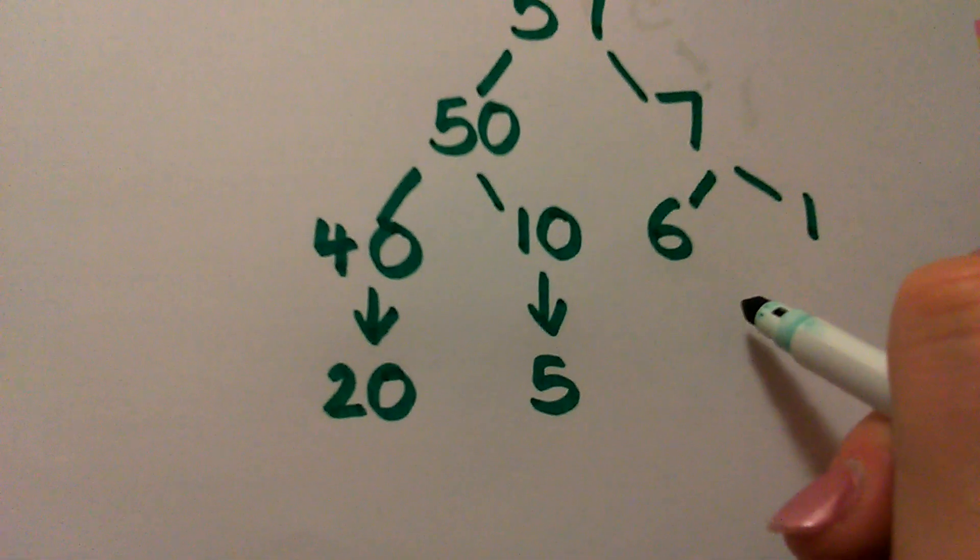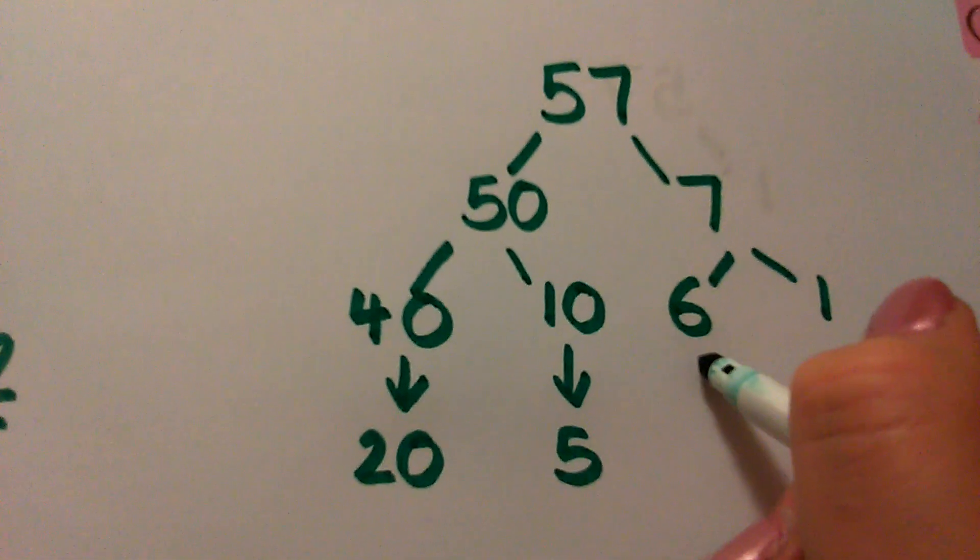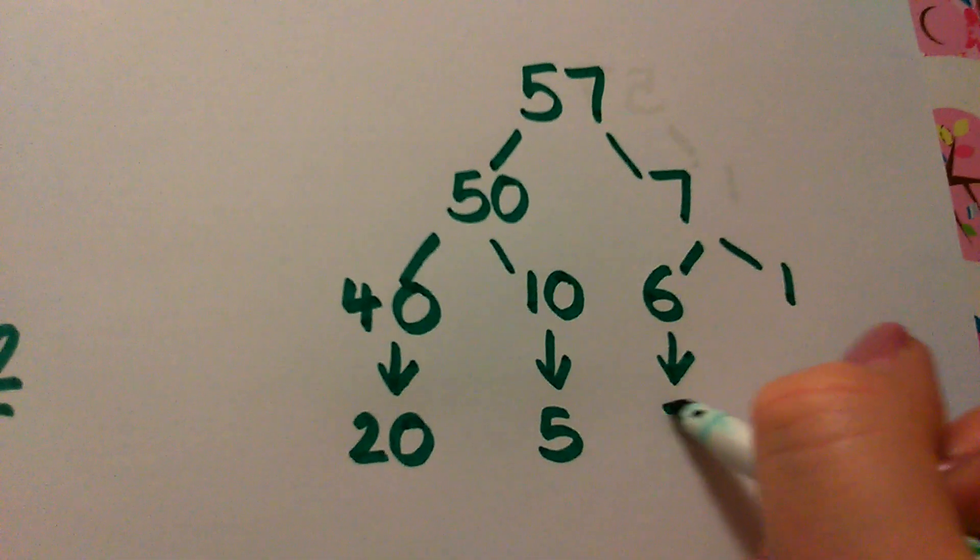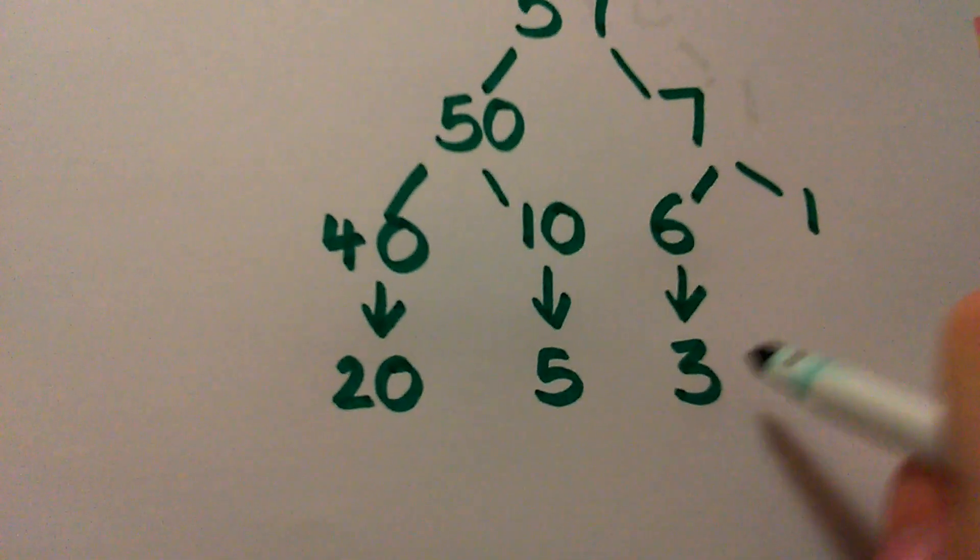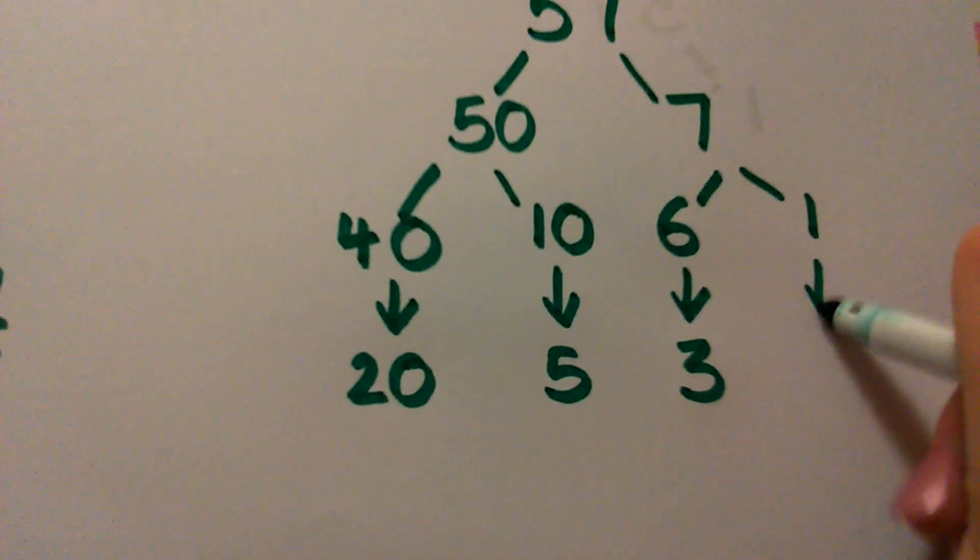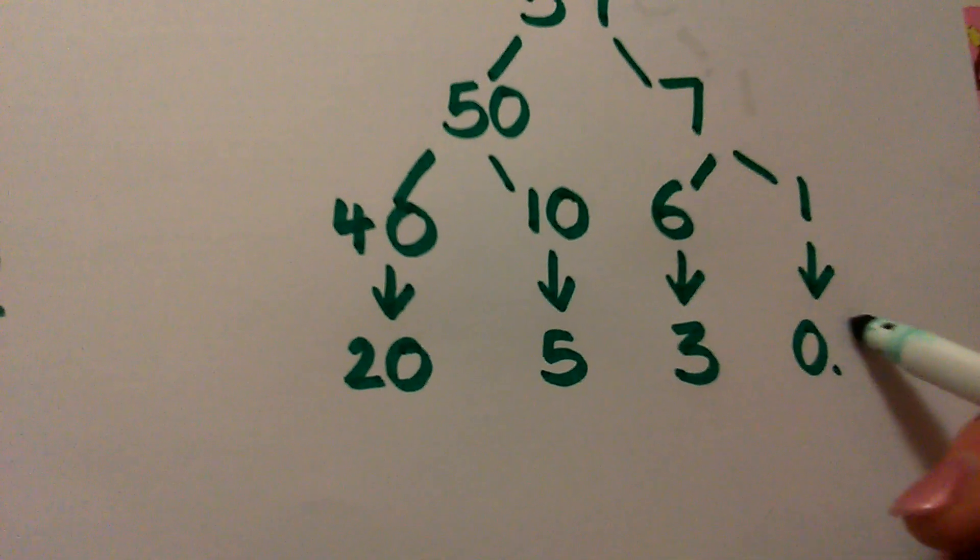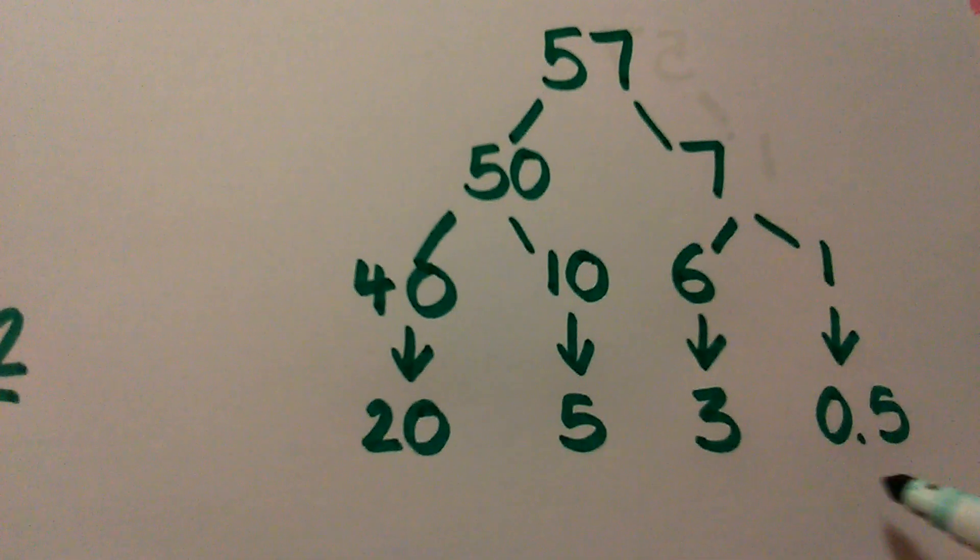And then again, these are much easier to halve. So 6 halved is 3. And 1 halved is 0.5 or a half in itself.